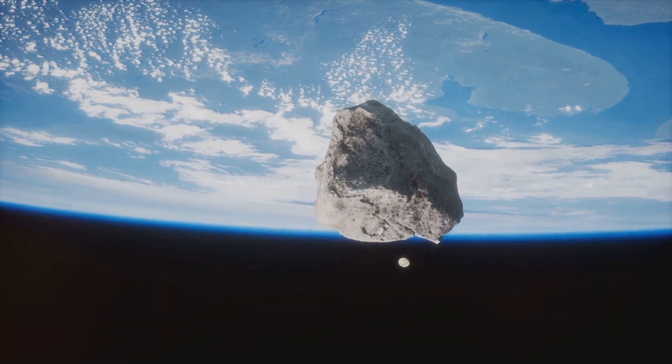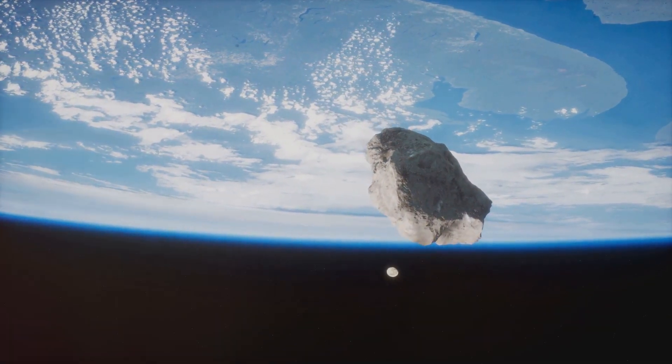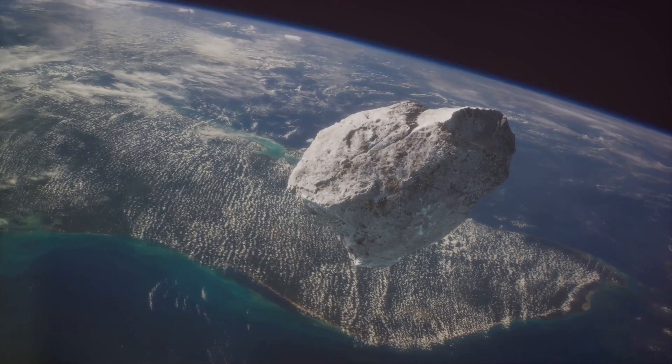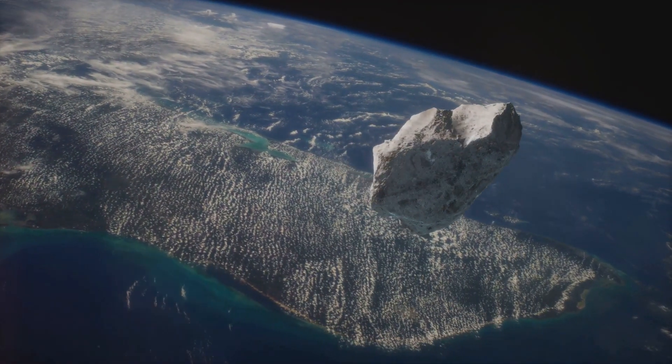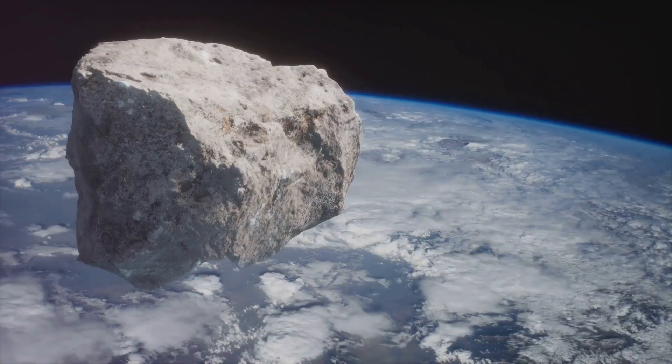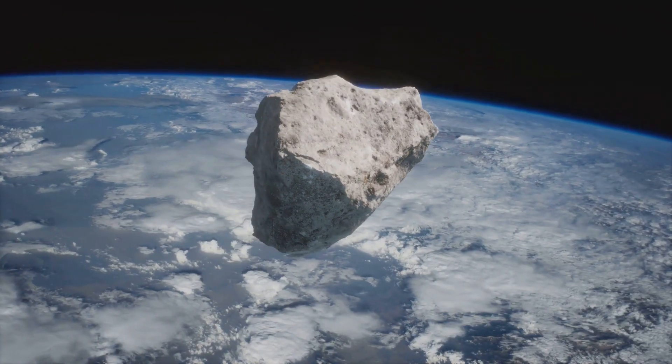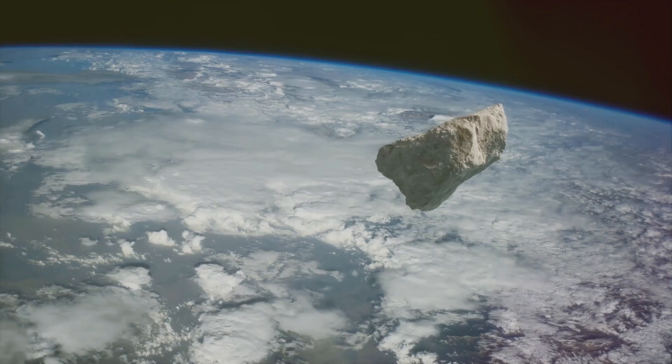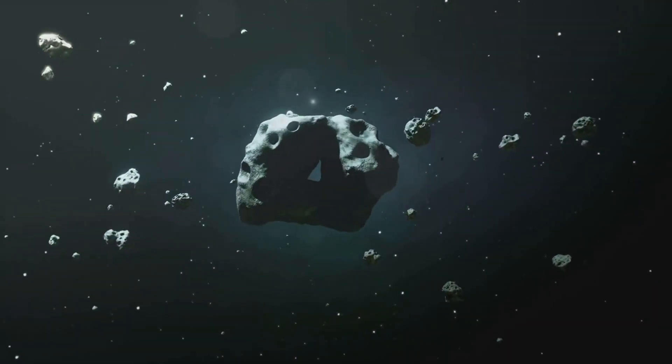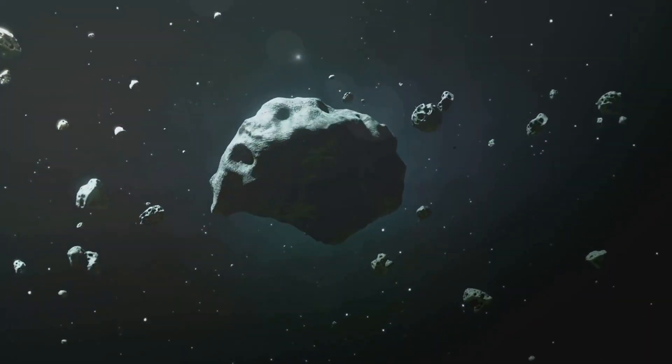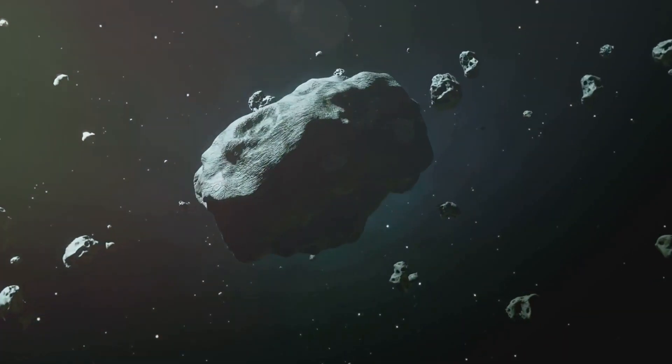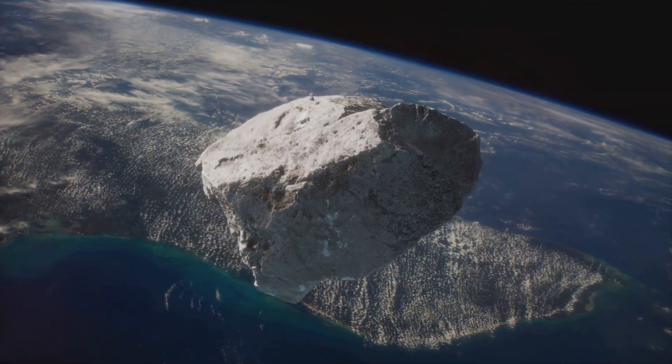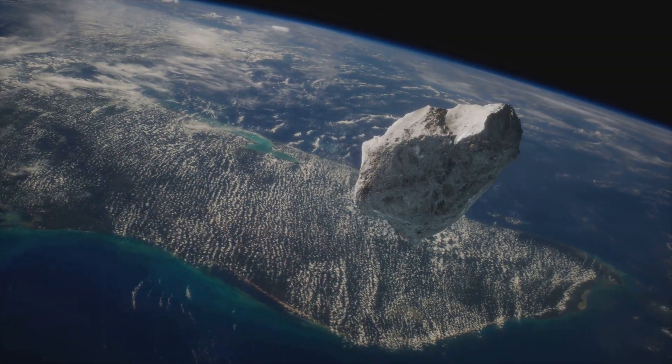News of the discovery quickly spread across the scientific community. Initial observations showed that Apophis was approximately 370 meters in diameter, that's about four football fields end-to-end. But the size wasn't what made Apophis special, it was its path. Initial calculations suggested that Apophis was on an orbit that could potentially bring it close to Earth. Very close.